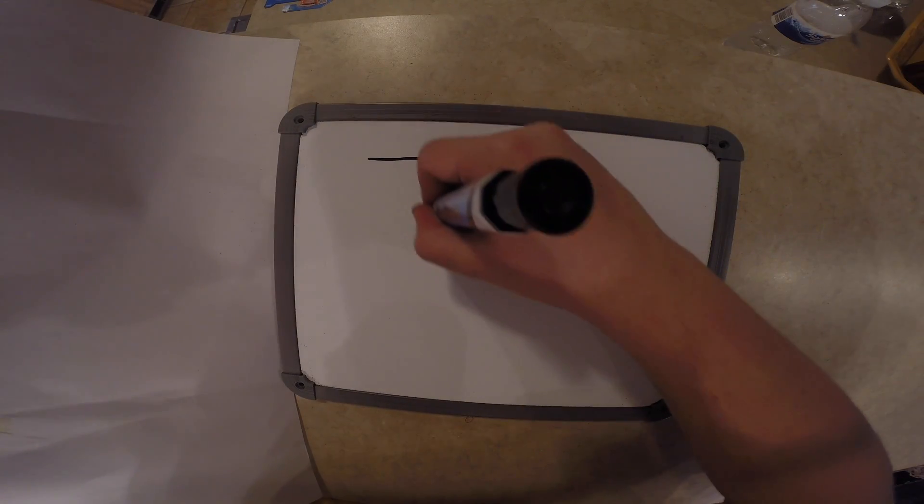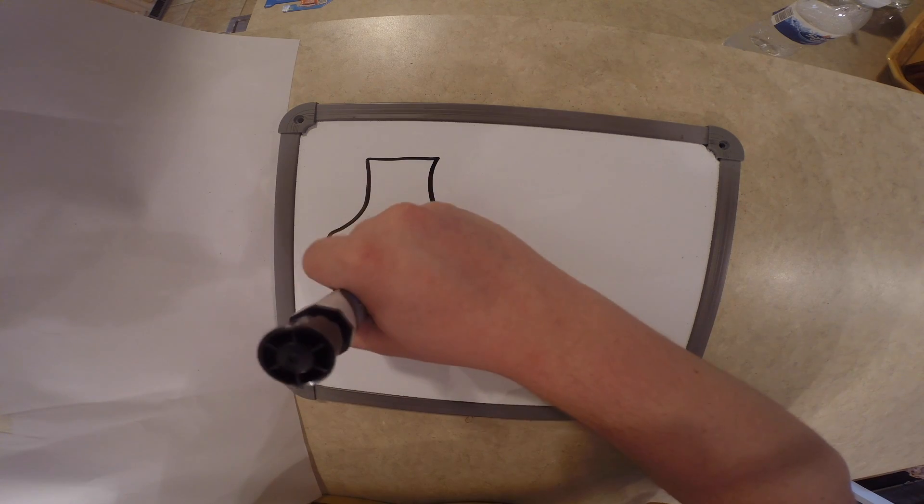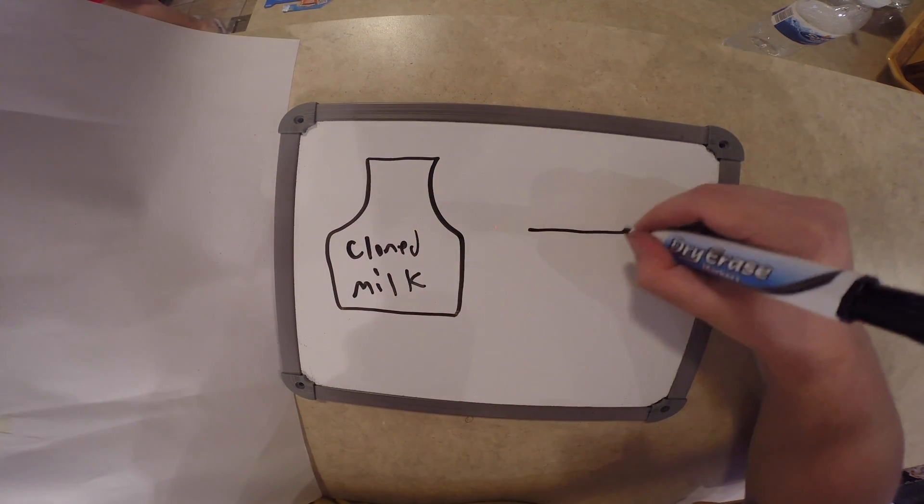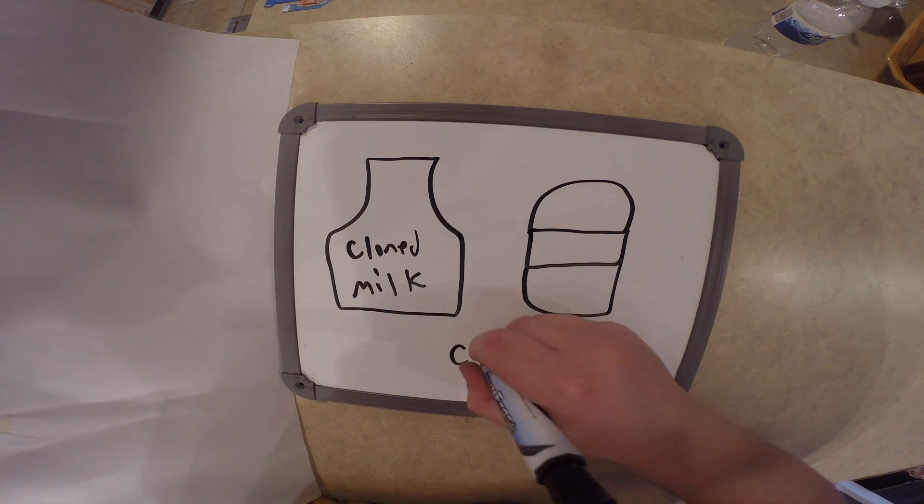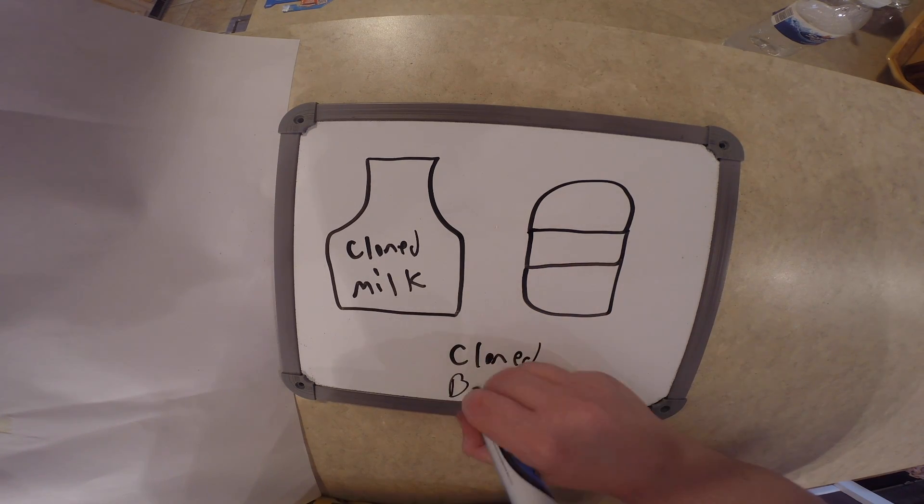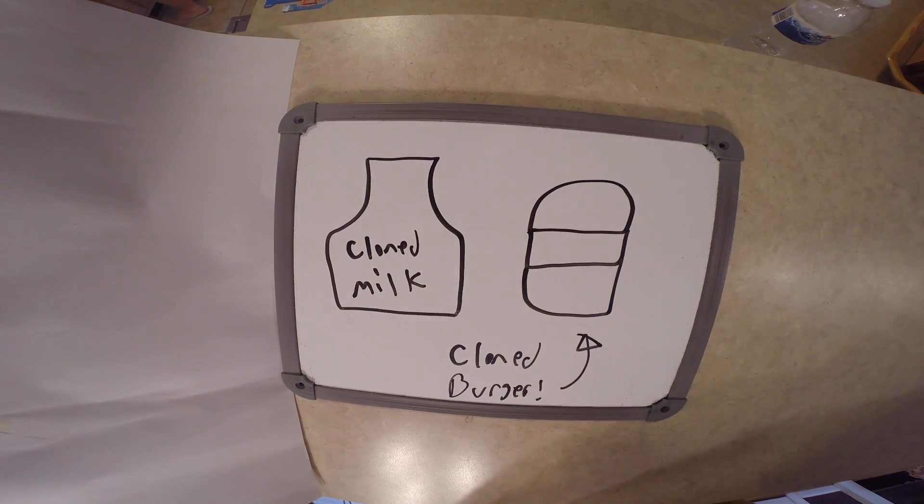In 2008, the FDA announced that milk and meat from cloned animals is as safe as if it were from natural animals. This means that with the power of cloning, we can recreate animals with desirable properties in agriculture, like a cow or goat with high milk production or cows with lean meat.